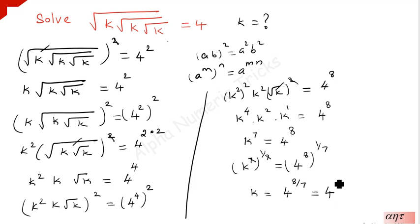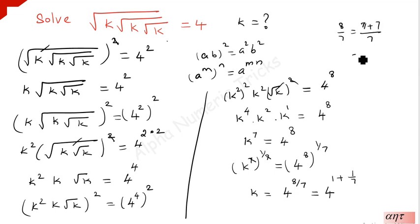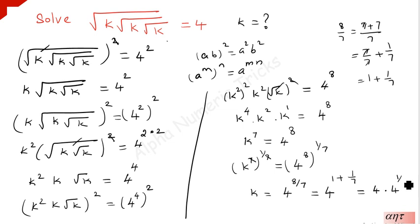We can write 8 over 7 as 7 over 7 plus 1 over 7, which equals 1 plus 1 over 7. So k is equal to 4 to the power 1 plus 1 over 7, which equals 4 times 4 to the power 1 over 7. Therefore k is equal to 4 times the 7th root of 4. That's the value of k. Thanks for watching.